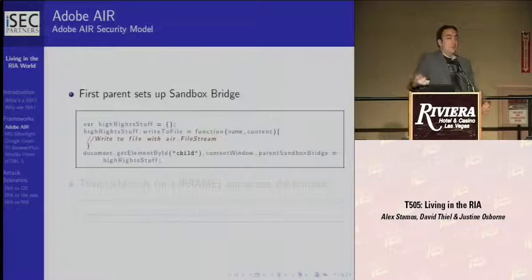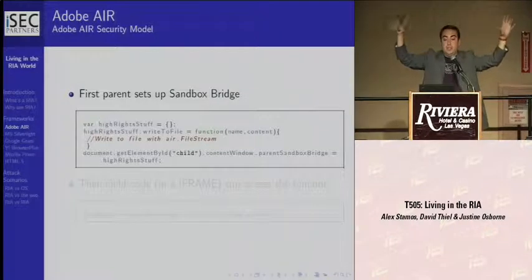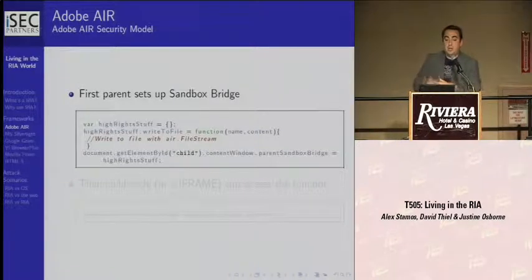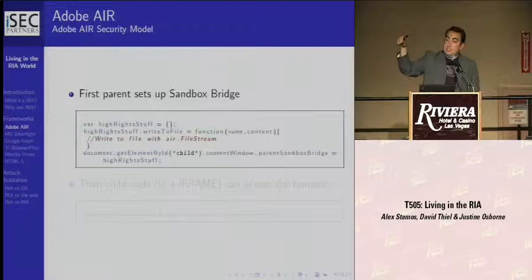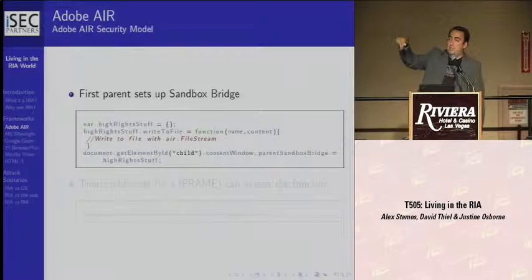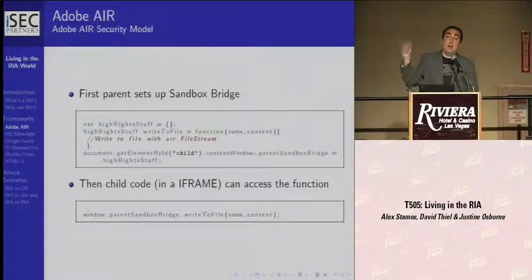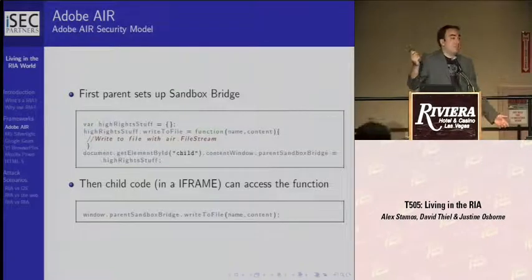The way the sandbox bridge works: say I have an application running in the application sandbox — it can do anything it wants. It wants to load up an iframe with untrusted code from the internet, but it has to expose some functionality to that untrusted code. You create an object — here we call it the high-right stuff object — give it a method called write-to-file with a bunch of dangerous stuff, and attach that object to the parent sandbox bridge. Then the code in the iframe can say: parent sandbox bridge, I'm going to use that dangerous function.